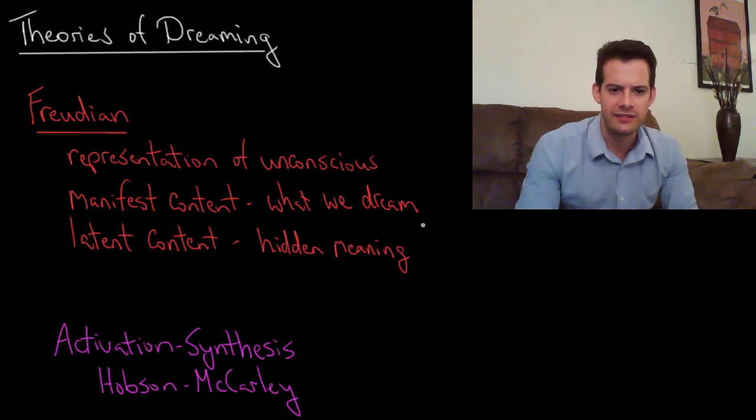Now there's two main problems with Freud's approach. The first problem is that sometimes we dream about things and it seems pretty direct. We don't seem to have this intermediary step of latent content and hidden meaning. We dream about things like desires and wishes and fears directly. We dream about sex and we dream about running from predators. In this case it doesn't seem like there's much hidden meaning.